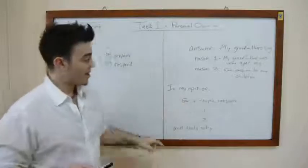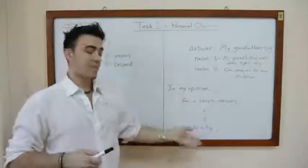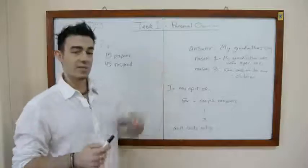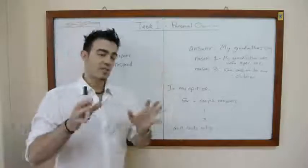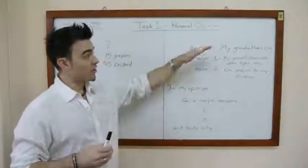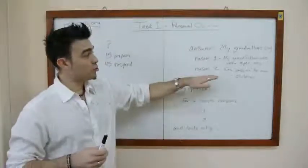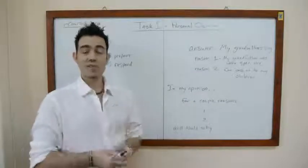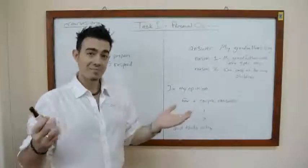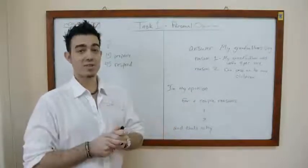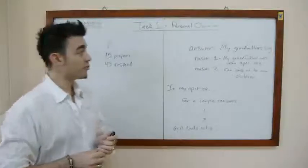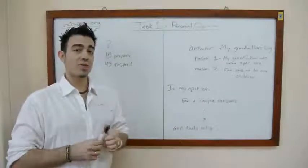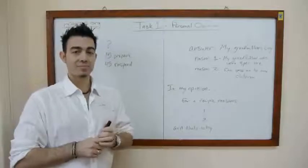At the very end you have that little sentence — 'and that's why' — and you restate your answer in slightly different words. So your answer, your two reasons, and then restating the answer should take up 45 seconds. It's really that simple. Now you'll see in task two it follows almost the same structure, so stay tuned for that one as well.